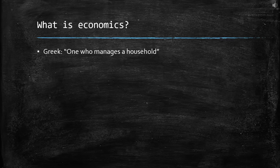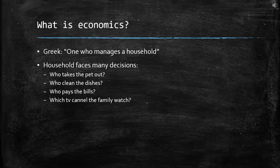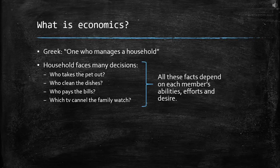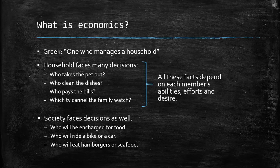Economics comes from the Greek word, which basically means one who manages a household. As we think about a household, we know that the household faces many decisions. For example, who takes the pet out, who cleans the dishes, who pays the bills, which TV channel their family watches. All these facts have something in common — they depend on each member's abilities, efforts, and desires. And if we think about a household, we can go beyond and find a society.